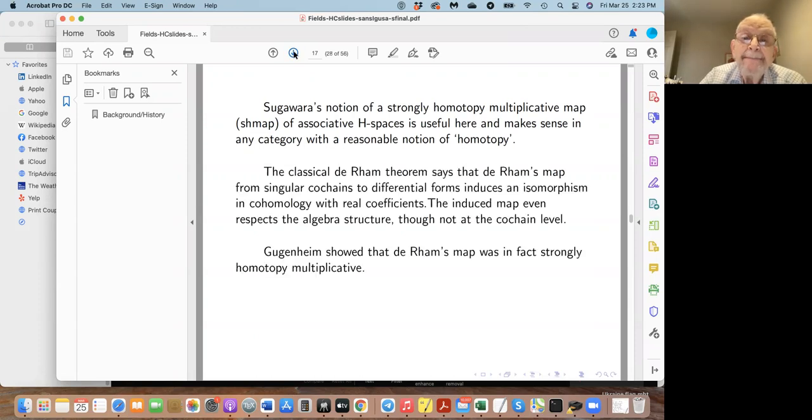It's useful here and makes sense in any category with a reasonable notion of homotopy. For example, the classical Eilenberg-Zilber theorem says that the induced map at the cohomology level respects the algebra structure, but not at the cochain level. Victor Guggenheim showed that the map was strongly homotopy multiplicative. That is to say, the cup product mapped to the wedge product up to homotopy.